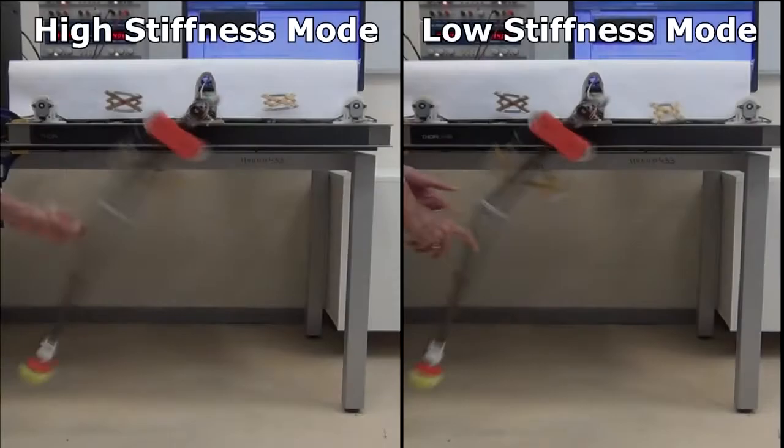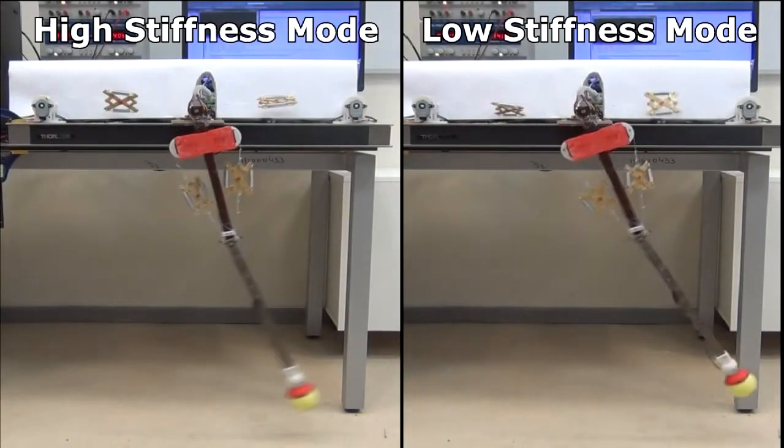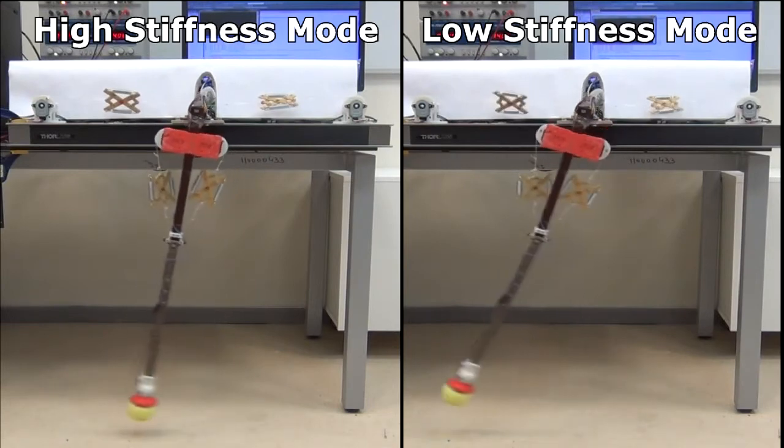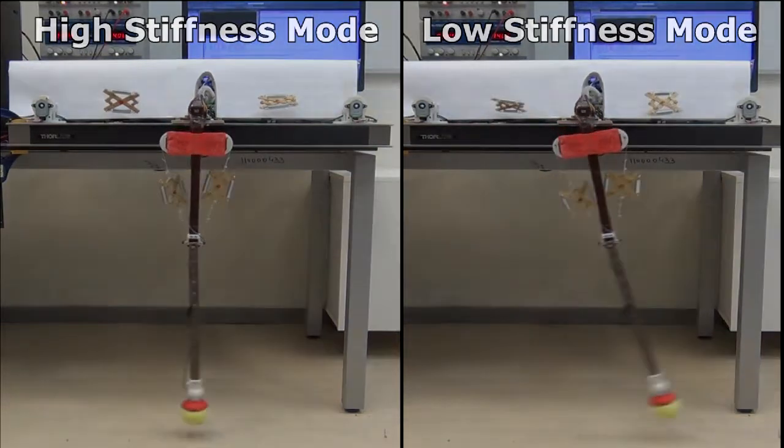Intrinsically compliant variable stiffness actuated robots can store energy in the elastic elements and modulate joint compliance.